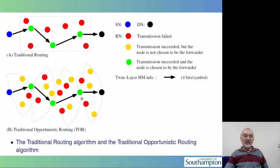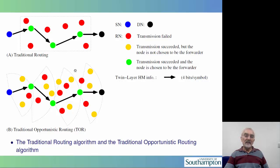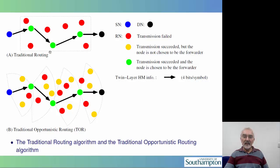Now let's move on to the cross-layer optimization aspects of our treatise. In conventional routing, the simple philosophy is that information is sent from the source node to the destination node after the route has been established. The establishment of the route exploits the fact that some nodes — like the red nodes indicated in this top left-hand corner — are unable to receive the signal at sufficiently high quality, whereas the green nodes are capable of receiving appropriately and therefore send the information through to the destination.